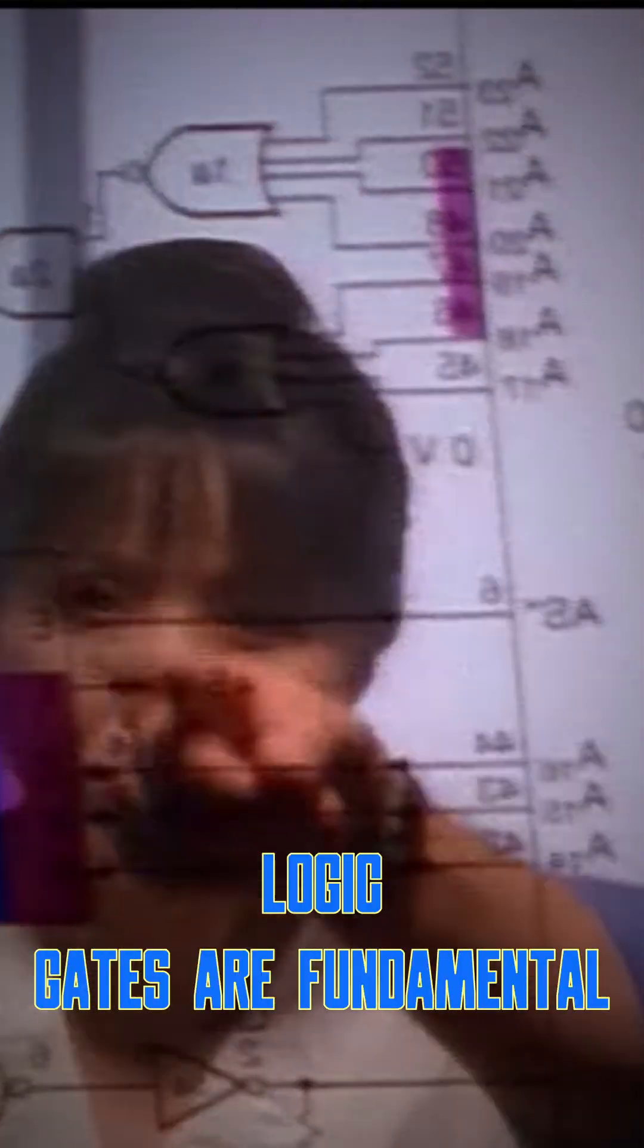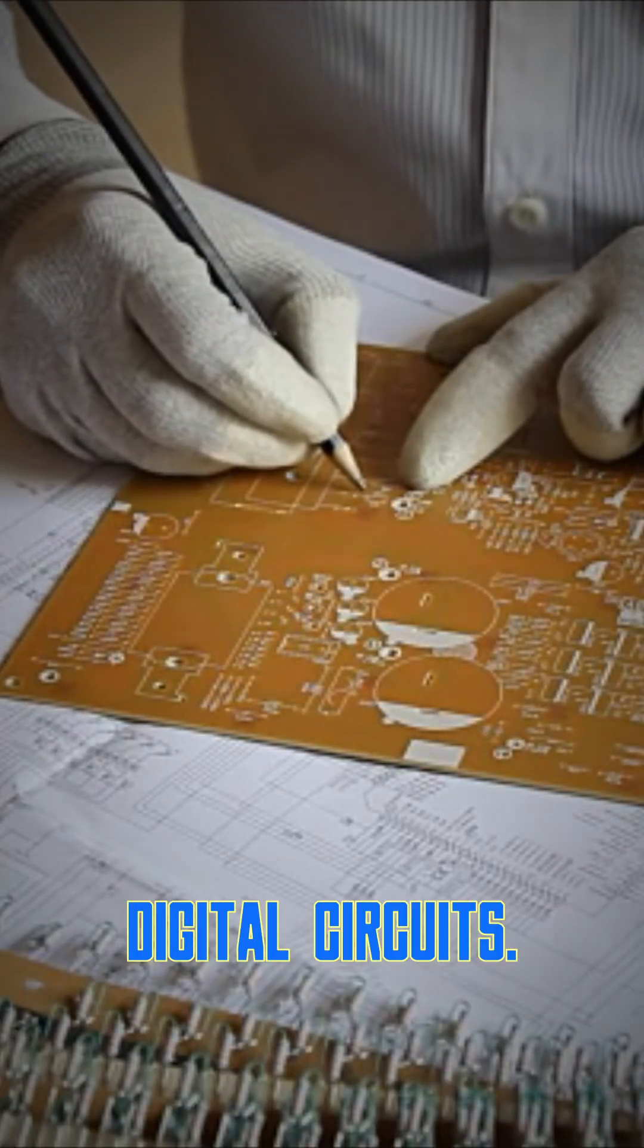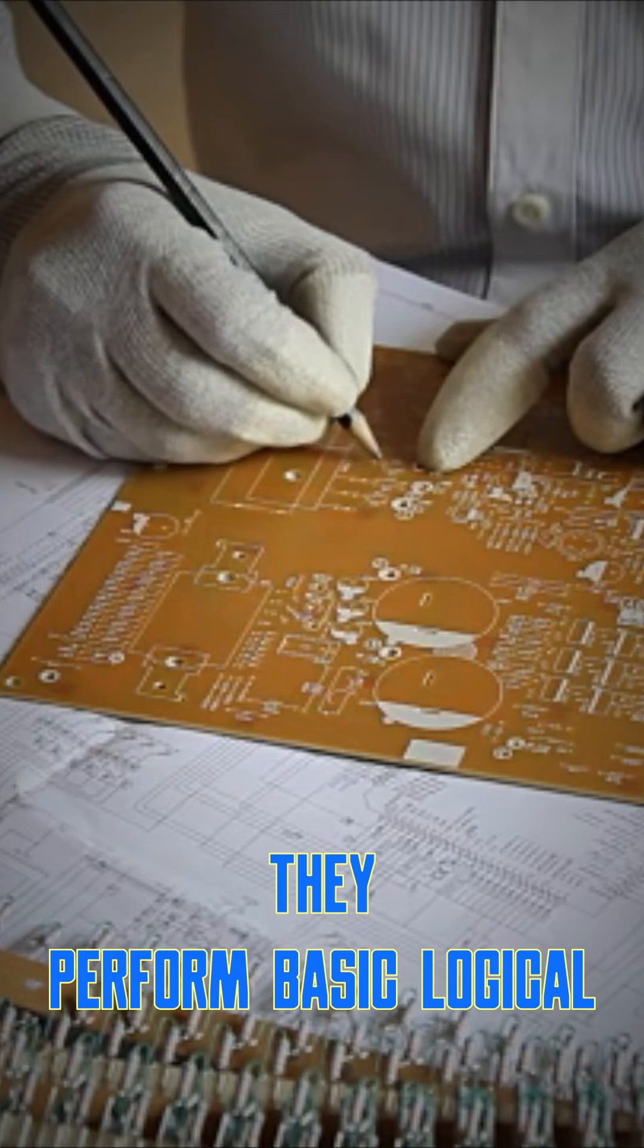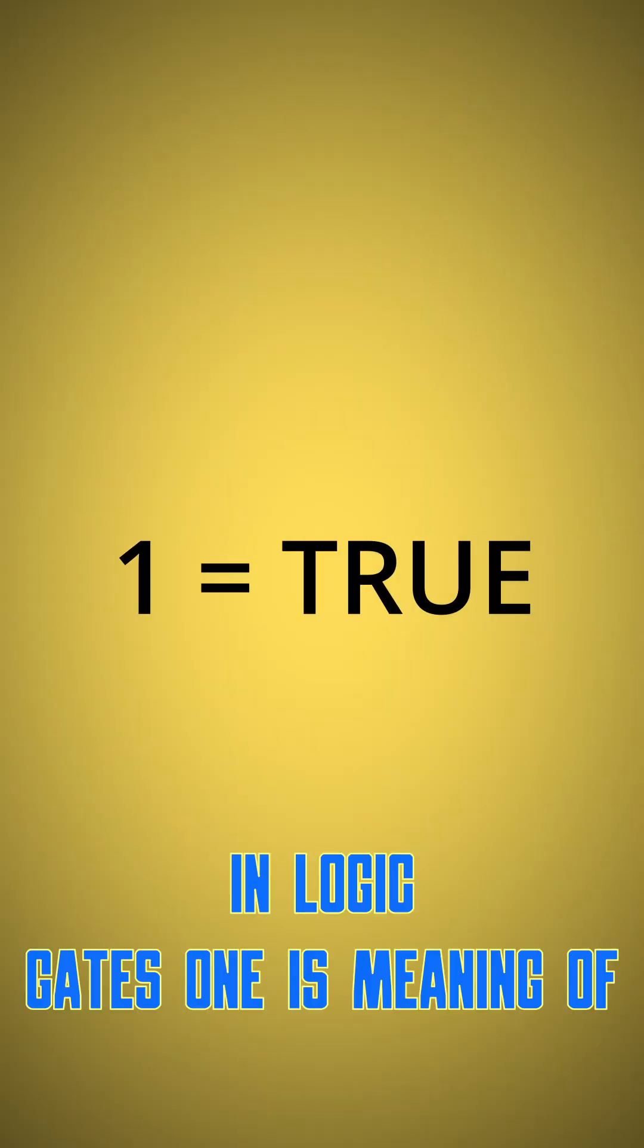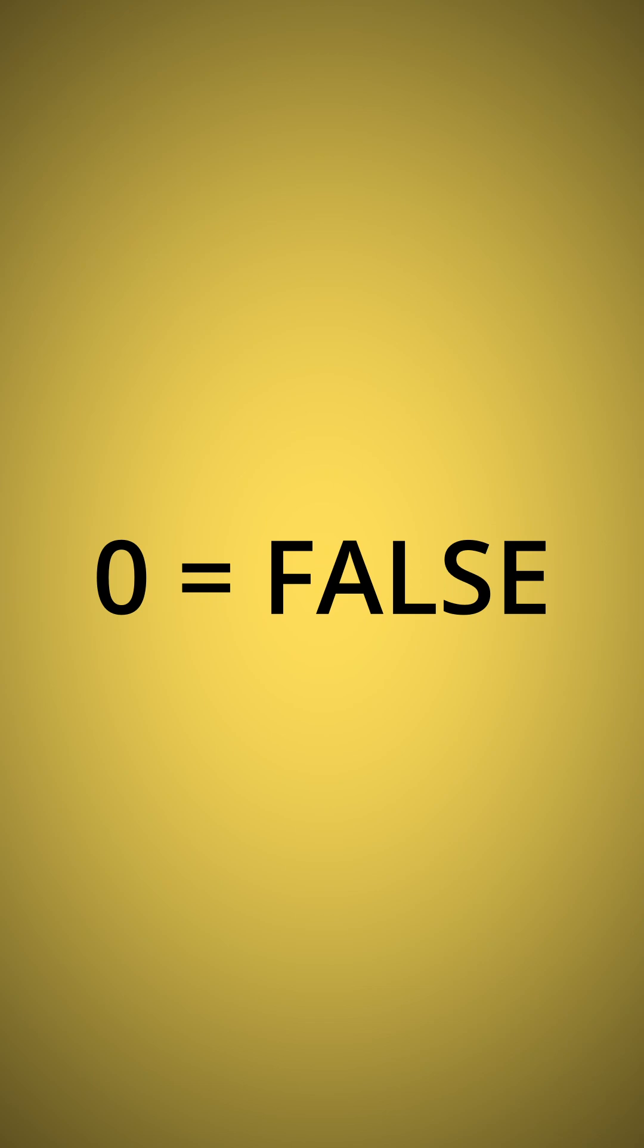What is logic gates? Logic gates are fundamental building blocks of digital circuits. They perform basic logical functions that are essential for computing and data processing. In logic gates, one is meaning of true while zero is false.